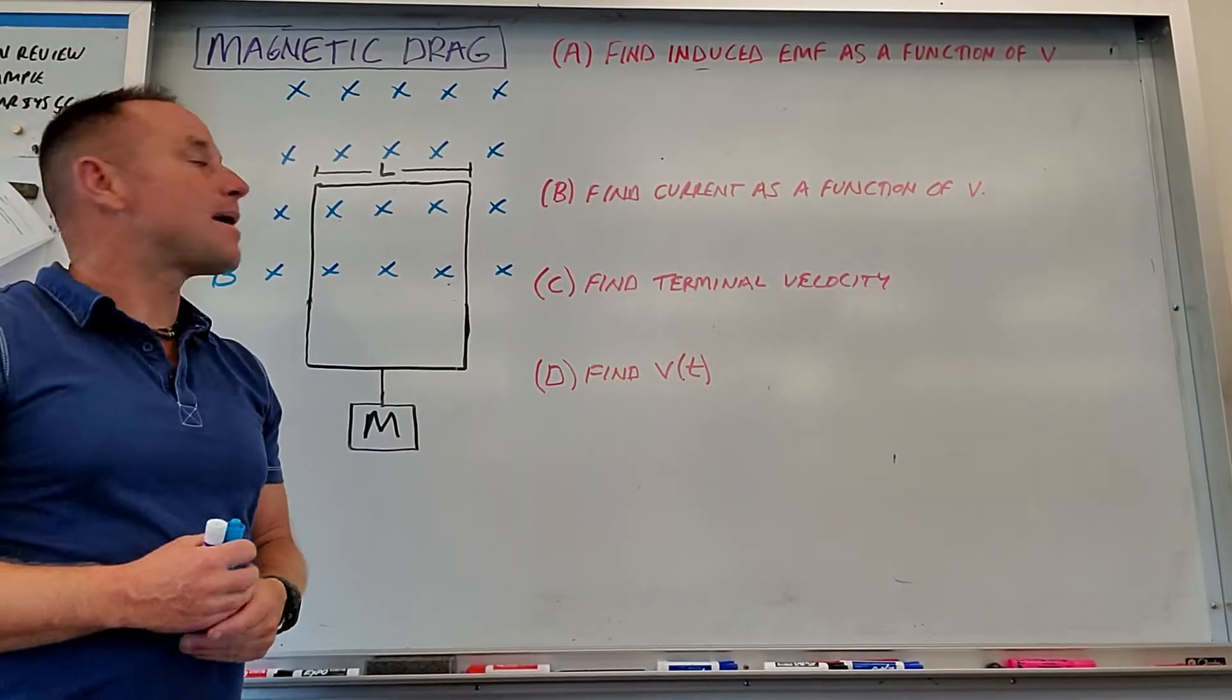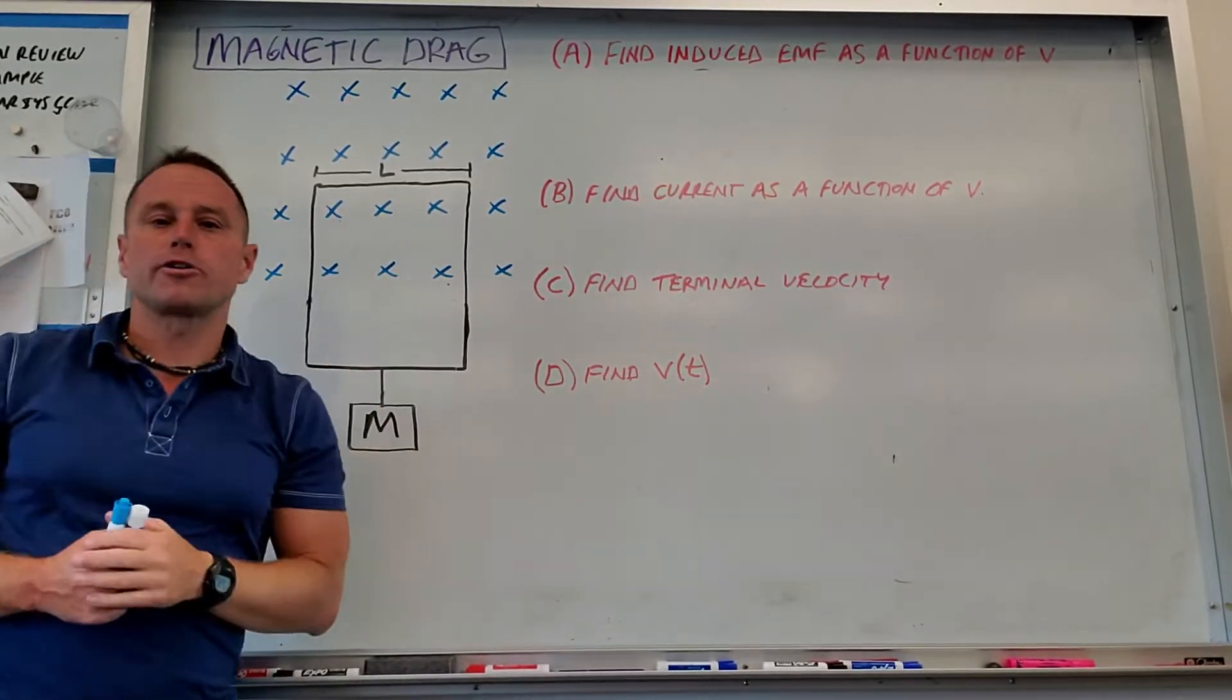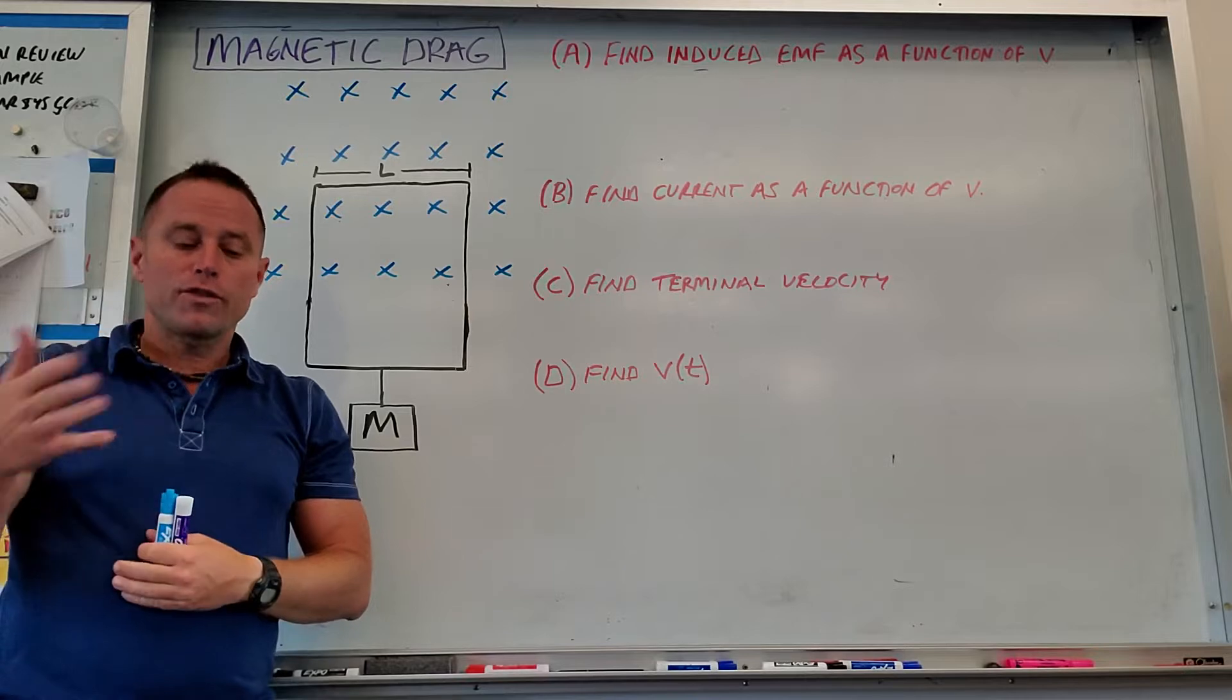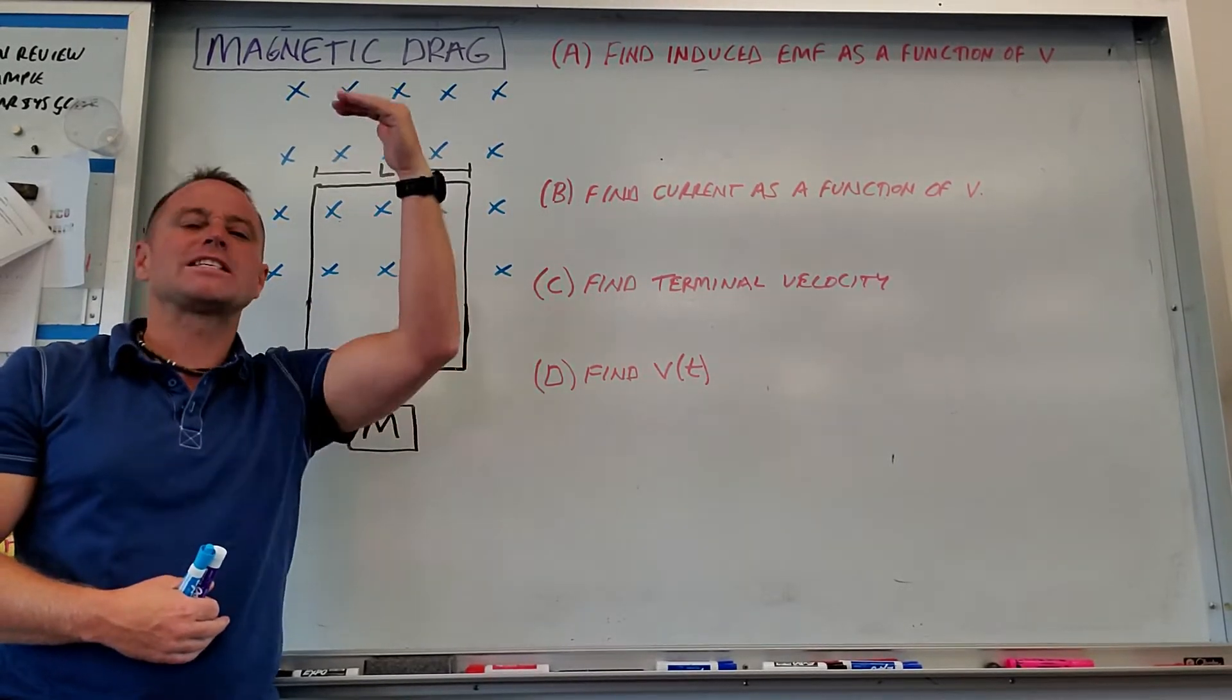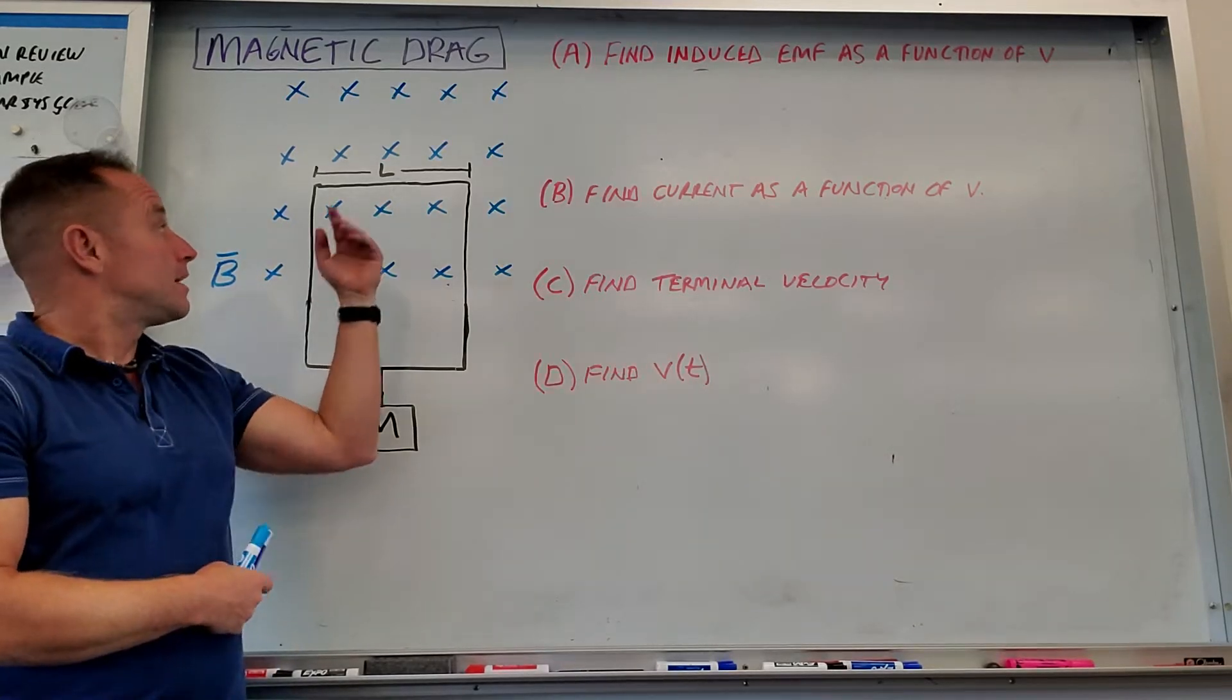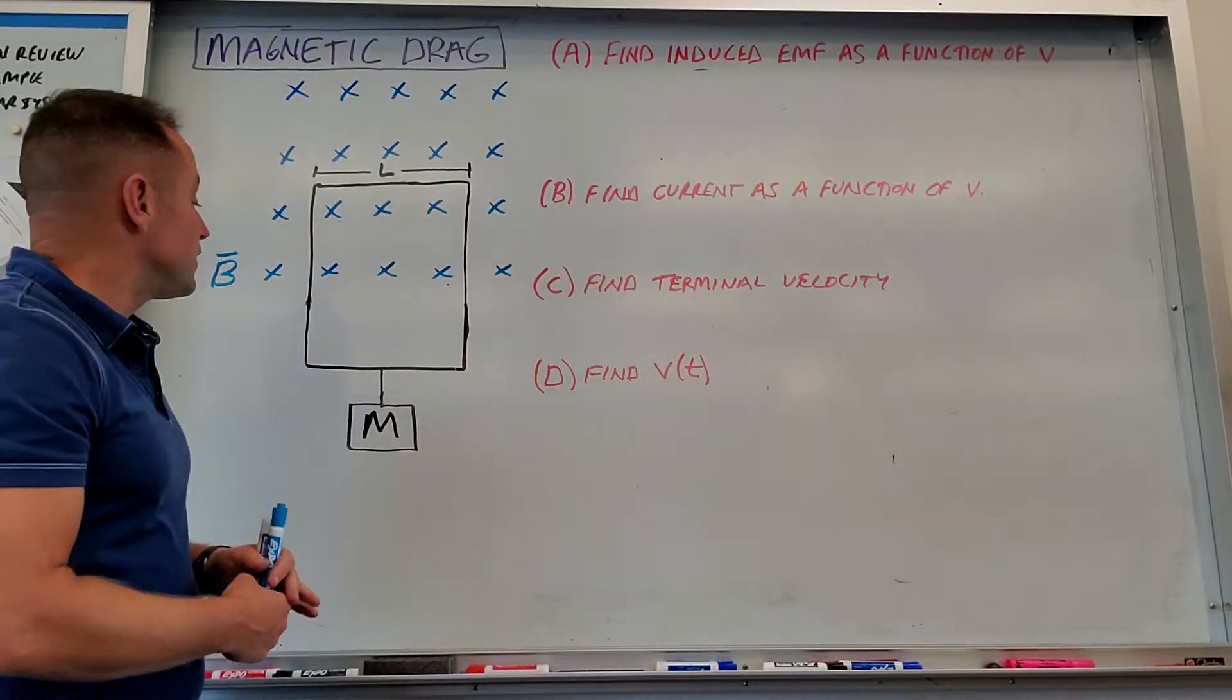All right, my friends, we're going to take a look at motion with magnetic drag. This is a useful scenario to understand because it shows up in a few ways in physics C, both in mechanics because of the motion with a linear resistance that's linear in velocity, and also because of the electromagnetic effects, we're going to see like induced voltage, induced current. So let's dive in.